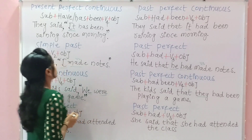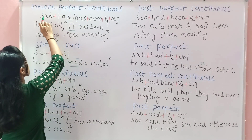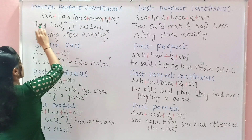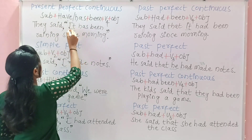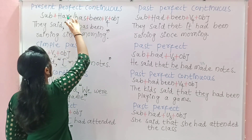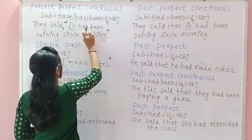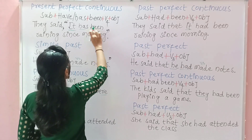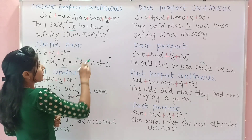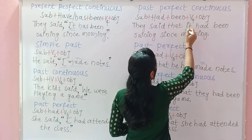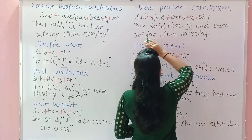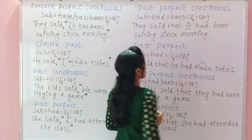Present perfect continuous becomes past perfect continuous in indirect speech. The formula is subject + have/has + been + V4 + object. For example: 'They say it has been raining since morning.' Here 'it' is the subject, 'has' is the helping verb, 'been' is also a helping verb, and 'raining' is V4. In indirect speech: 'They said that it had been raining since morning.' The past form of 'has' is 'had,' and the rest of the sentence remains the same.